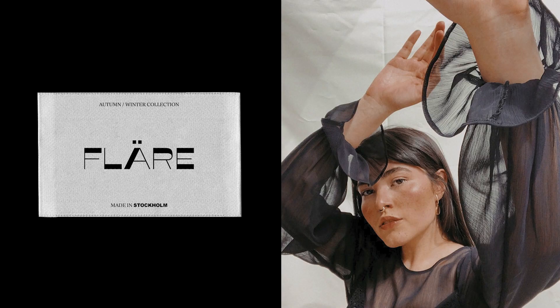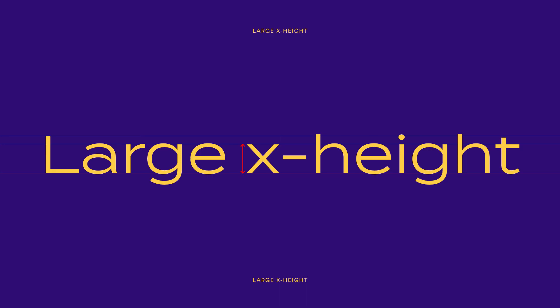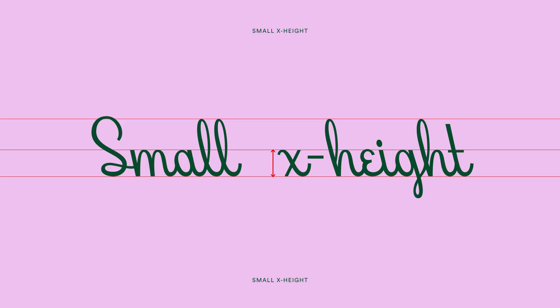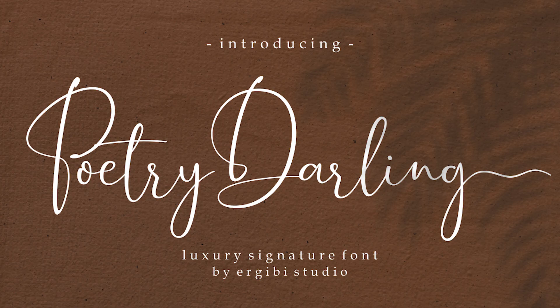X-height refers to the height of the lowercase x. But what it's really talking about is the contrast and height in the different elements of a character. A large x-height means the letters are all very similar in size, while a small x-height means there's more of a height difference between the lowercase body and its ascender, for example. Fonts with a large x-height are more homogeneous, with shorter ascenders and descenders — they feel more stable, safe, and grounded. Fonts with a smaller x-height have longer ascenders and descenders and feel a lot more artistic; they're usually used in poems, lyrics, and other more personal pieces of writing.